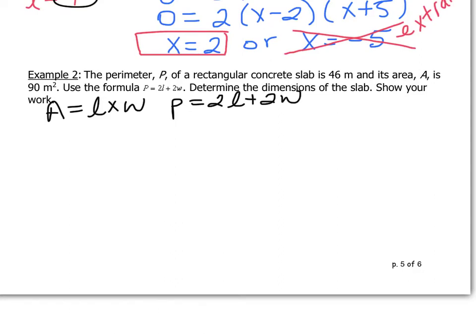What we need here is we need some previous knowledge that the area of a rectangle can be found by length times width and the perimeter of a rectangle can be found by 2l plus 2w. Now we have that the area is 90 meters squared. So I've got 90 equals l times w. And I also know that my perimeter, which is 46 meters, can be found using the formula 2l plus 2w.